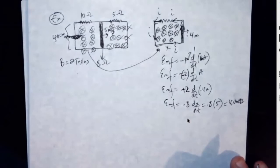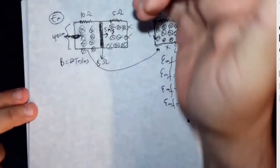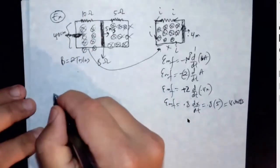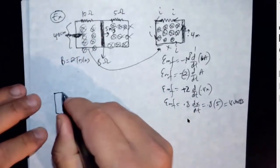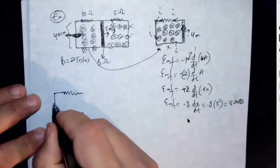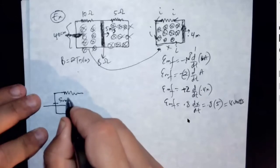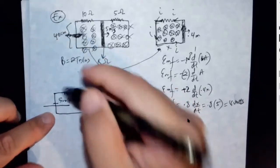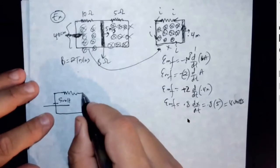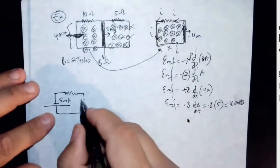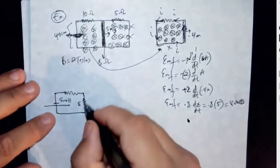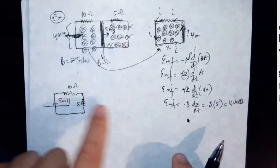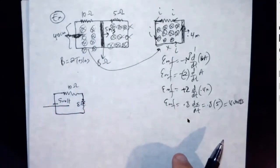4 volts and it's positive — which means it will drive the current to be counterclockwise. So you can replace this sliding rod with a 4 volt battery pushing current counterclockwise. This rod has 8 ohm resistance and this is a 10 ohm resistor. Now let's analyze the right side — then we'll have a Kirchhoff's loop circuit going on.